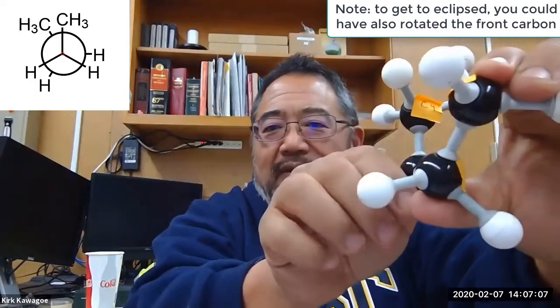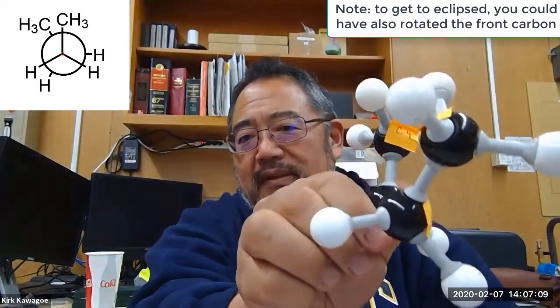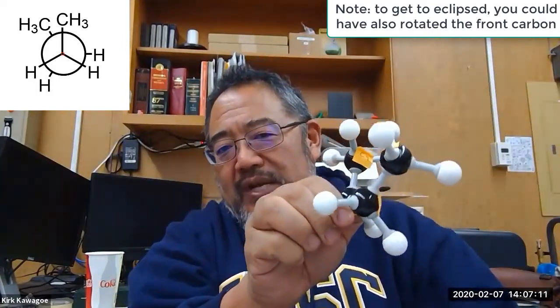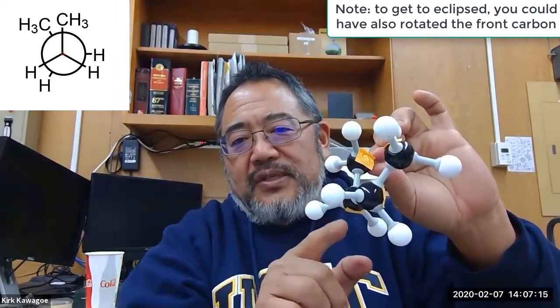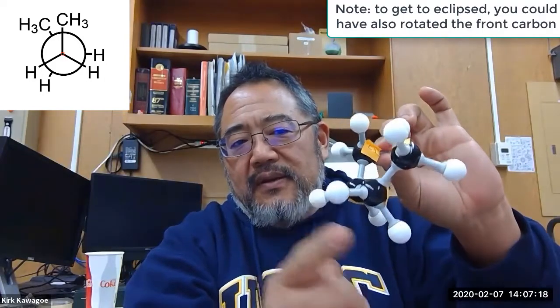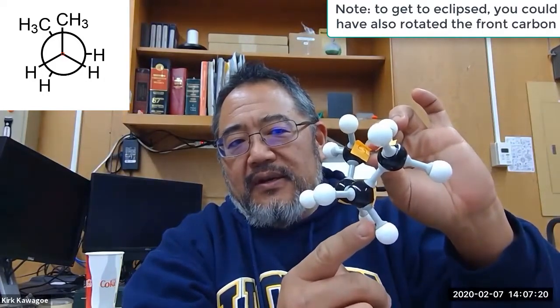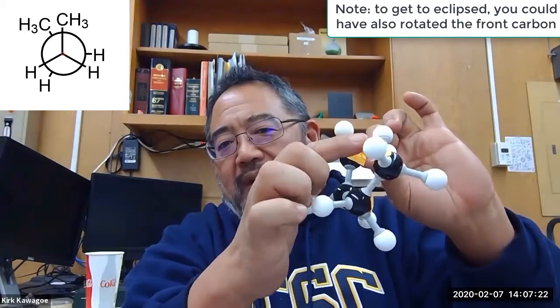So what we do is we try to tilt it a little bit like this. So you're going to see a Newman projection. You'll see the hydrogens together here and here. The hydrogens here and here. And then the methyl groups are here and here.